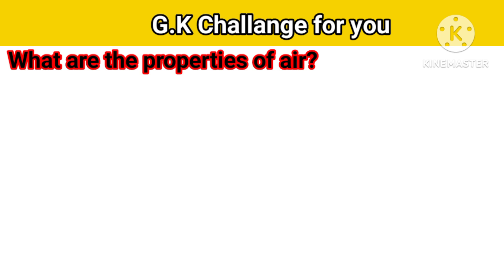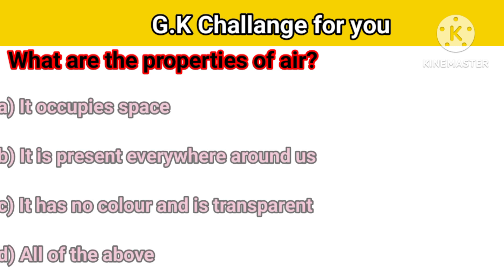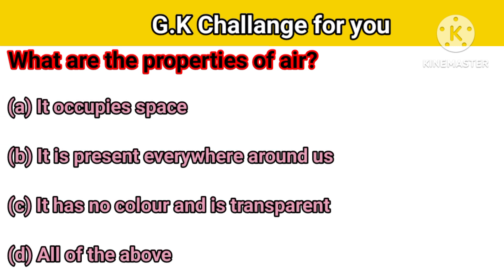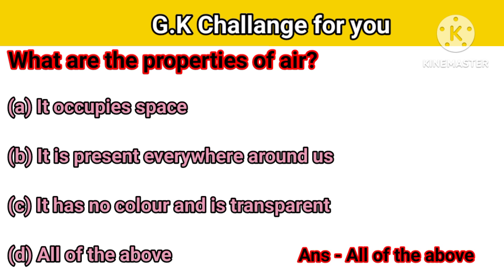Next question: What are the properties of air? Option A: It occupies space. B: It is present everywhere around us. C: It has no color and is transparent. D: All of the above. Your right answer is all of the above.